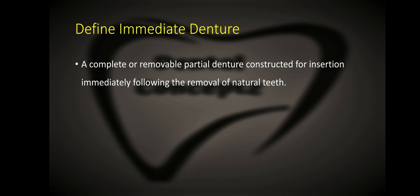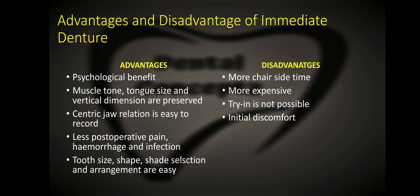What is an immediate denture? An immediate denture is a complete or removable partial denture constructed for insertion immediately following the removal of natural teeth. Advantages include psychological benefit, preservation of muscle tone, tongue size and vertical dimensions, easier recording of centric jaw relation, less post-operative pain, hemorrhage and infection, and easier tooth size, shape, shade selection and arrangement. Disadvantages are that it requires more chairside time, is more expensive than a conventional complete denture, try-in procedure is not possible, and there is initial discomfort.